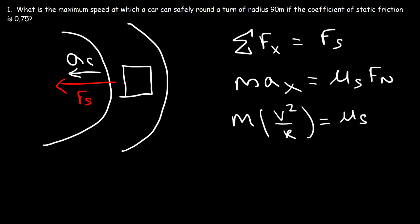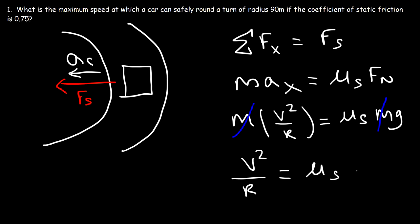The normal force on a horizontal flat surface is simply equal to the weight of the object, which is mg. So in this problem we can cancel the mass — the maximum speed of the car does not depend on the mass. What we have left is v squared divided by r, which is equal to mu_s times g. Multiplying both sides by r, v squared equals mu_s times g times r.